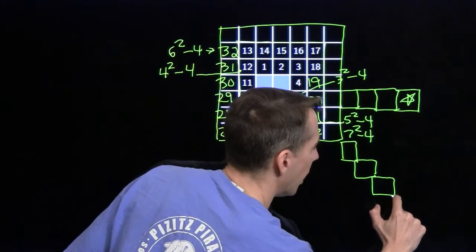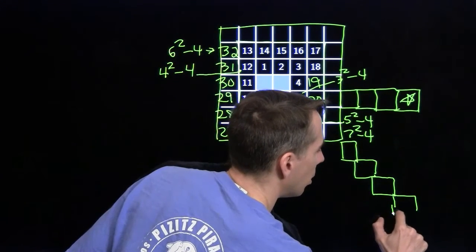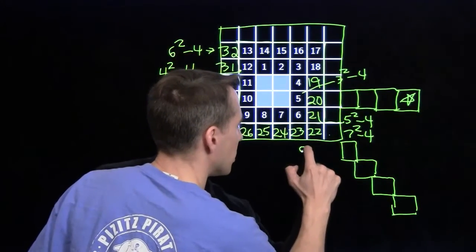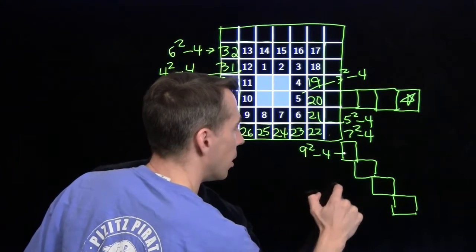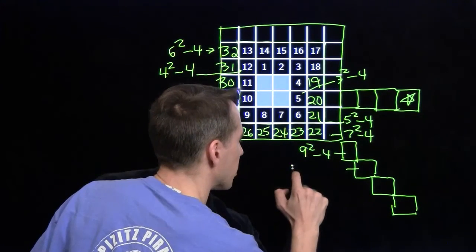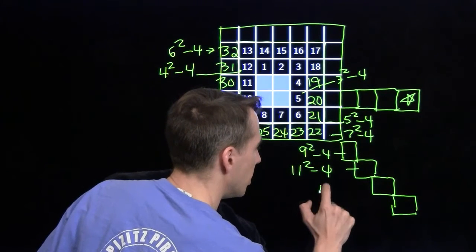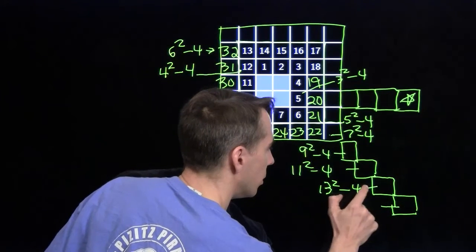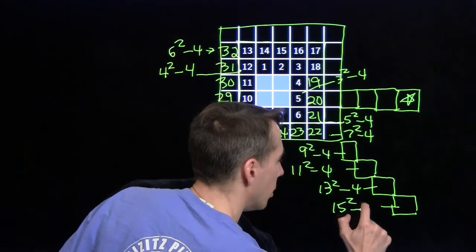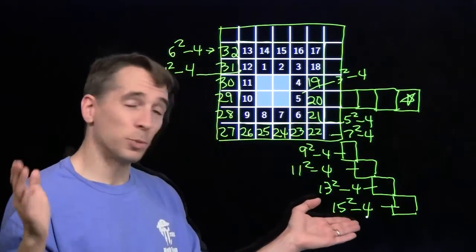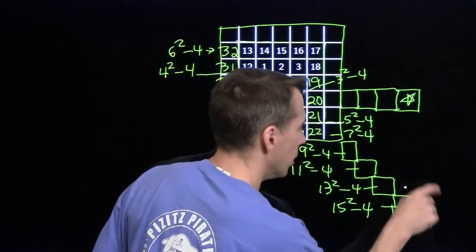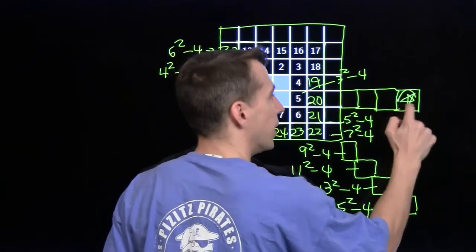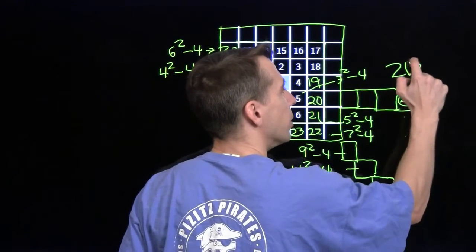Going one step out gives a seven-by-seven grid: seven-squared minus four right at that corner. My target is further out, so I keep going. One more step: nine-squared minus four. Then 11-squared minus four, then 13-squared minus four, and then 15-squared minus four. 15-squared is 225, subtract four gives 221. Counting back from that corner to the target: 220, 219, 218, 217, 216, and right at the star we've got 215.